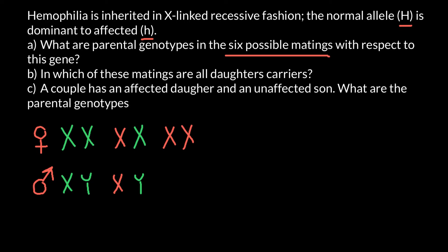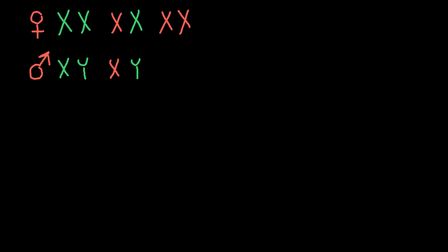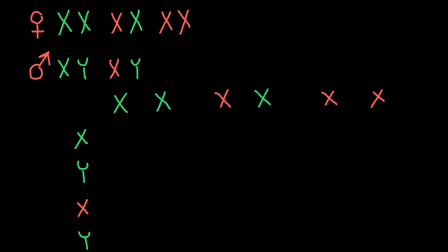Let me build a simple Punnett square. I'll list the genotypes for females on top: first, two normal X chromosomes; second, one defective and one normal X chromosome; third, two defective X chromosomes. For the males on the side: first variant is normal X with normal Y; second variant is defective X with normal Y.